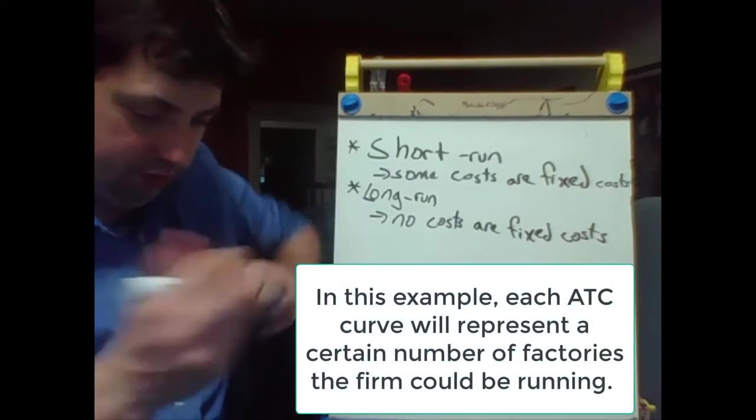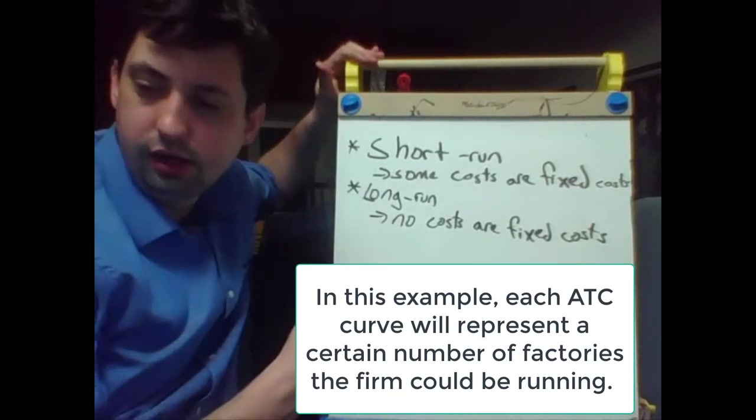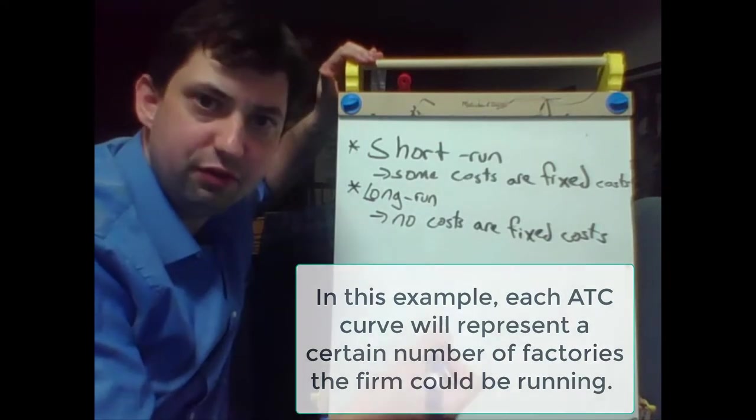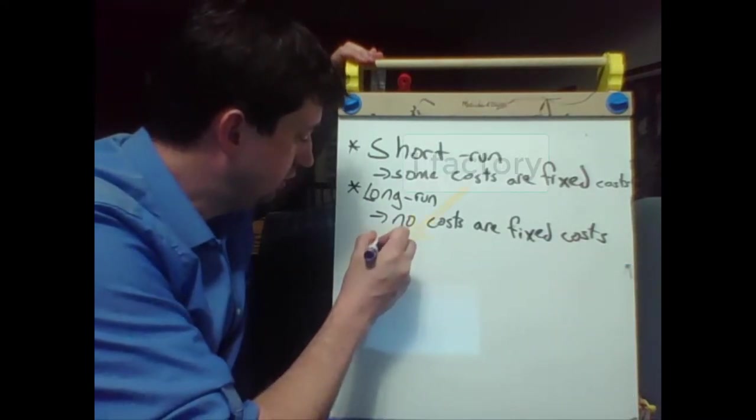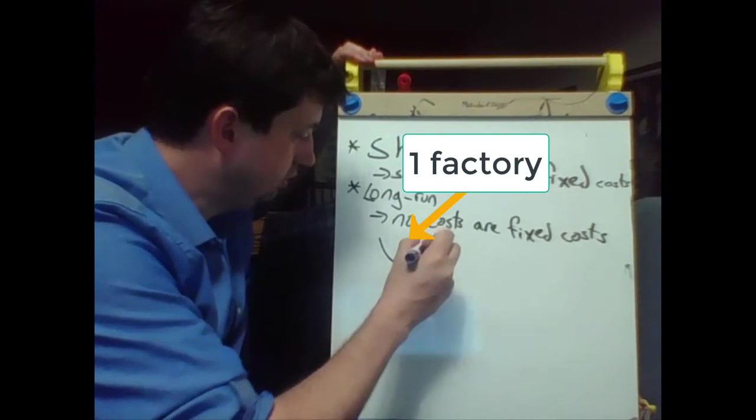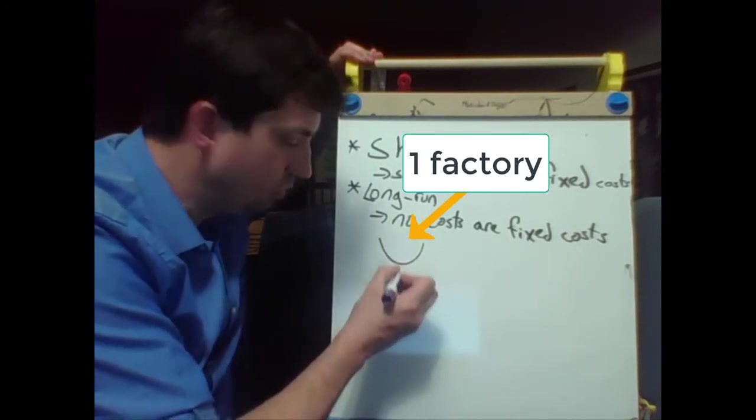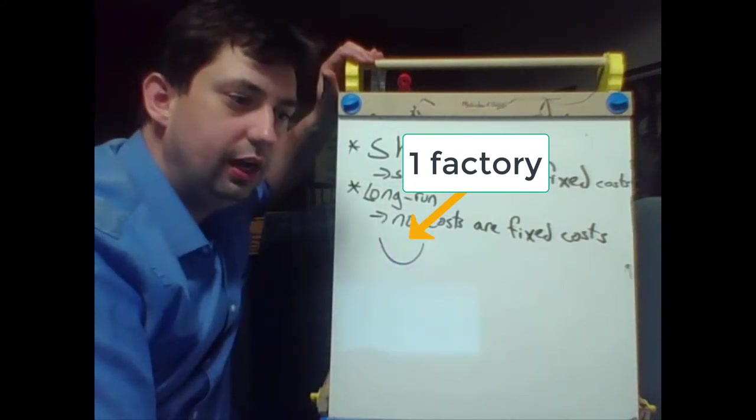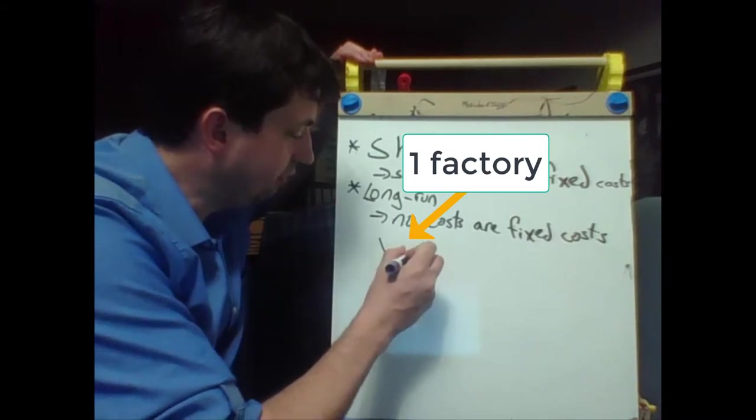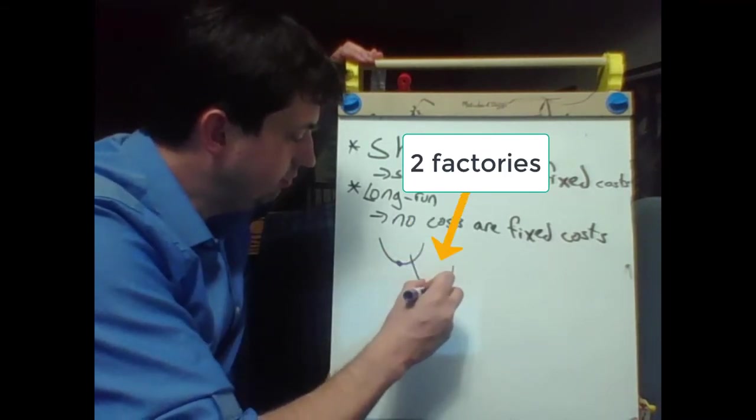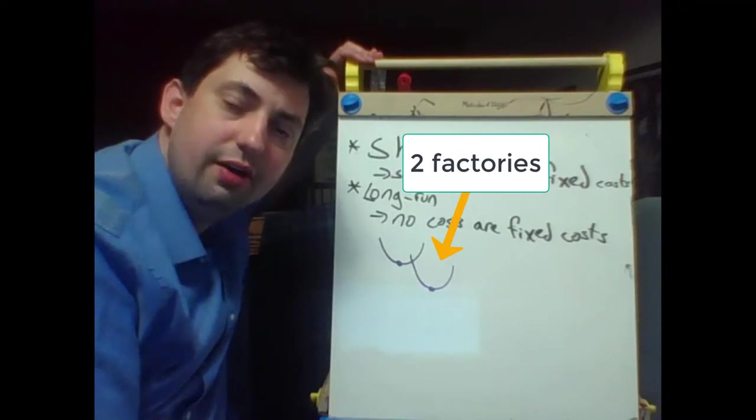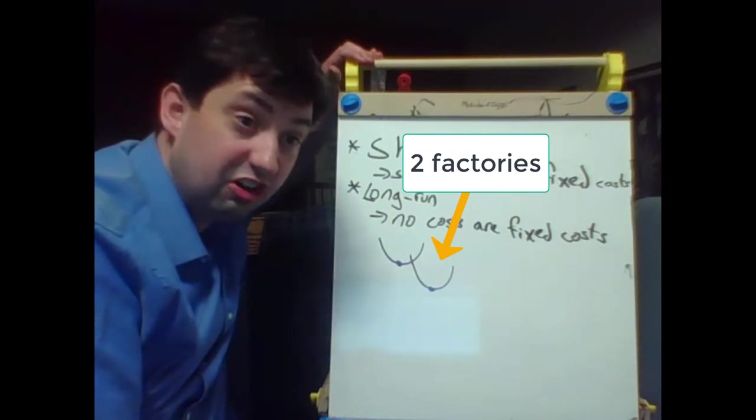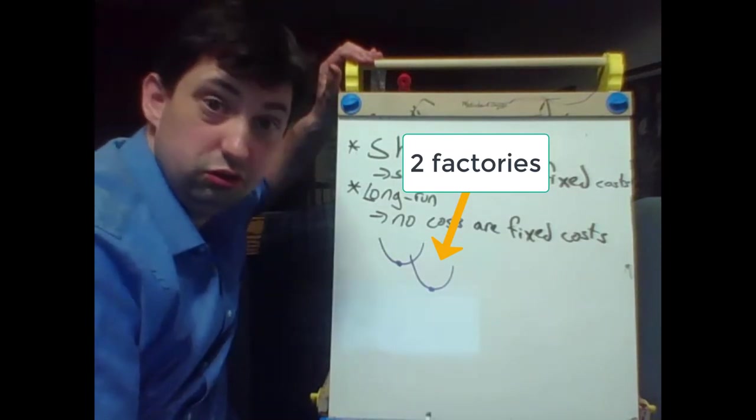One way to sort of visualize this is to imagine a series of short run average total cost curves. Like, there might be one here when production is low. But then, as you produce more and more and more, the lowest point actually falls. Maybe you get better specialization of labor. You're able to hire individual people that can really focus on one particular part of your production of your washing machine or your dolls or whatever it is.